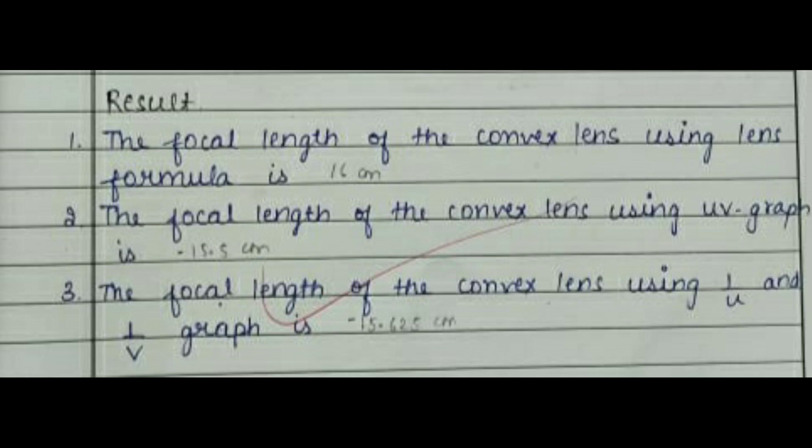This image shows the result that has been obtained after the practical has been performed. You can notice that the focal lengths have been obtained after three ways: by lens formula, u-v graph, and 1 by u and 1 by v graph.